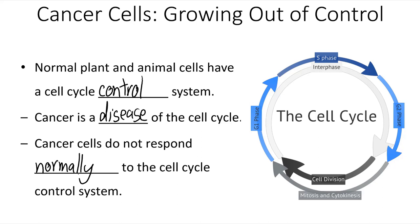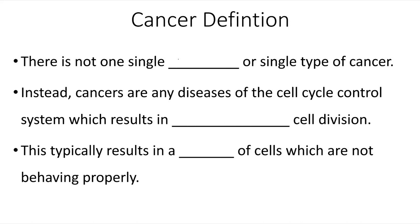There is no single cause or single type of cancer. Instead, cancers are any diseases of the cell cycle control system which result in uncontrolled cell division.